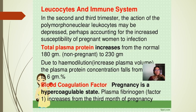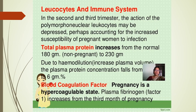Leukocytes and immune system: in the second and third trimester the action of polymorphonuclear leukocytes may be depressed, accounting for increased susceptibility to infection in pregnant women. Total plasma protein increases from 180 g to 230 g, but due to hemodilution plasma protein concentration falls from 7 g to 6 g per deciliter. Blood coagulation: pregnancy is a hypercoagulable state, with plasma fibrinogen increasing from the third month.